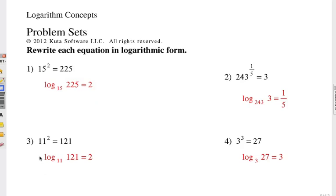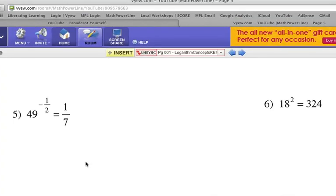Number 3: 11 squared equals 121. What's the base? 11. So it's log base 11. What's the answer? 121. So log base 11 of 121. And you should know by now, 11 to the what power is 121? The answer is 2. That's the exponent. The log is the exponent. Here we go. So 3 to the third is 27. So the base is 3. 3 to the what power is 27? 3. It just takes thinking backwards a little bit. Finally, 5 and 6. Give those a try so you can write them in logarithmic form.